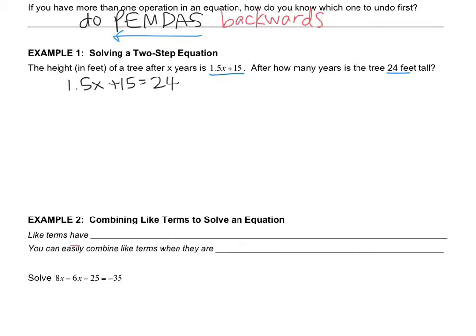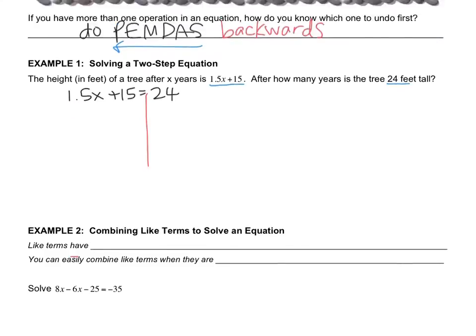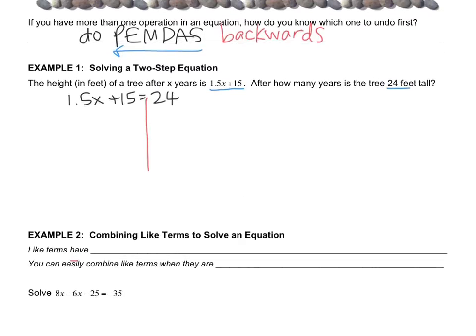So now the structure that we built last lesson is to drop a line down the equal sign. And now you actually have to determine what operations you have. I have addition and I have multiplication. So if you think about our order of operations, the first thing we're going to do is get rid of the addition first, and then we'll get rid of the multiplication because we're going backwards.